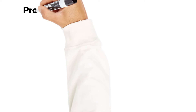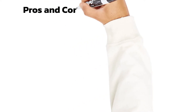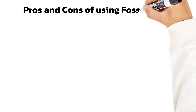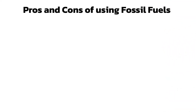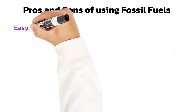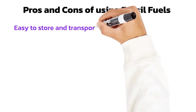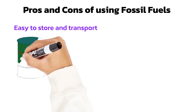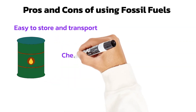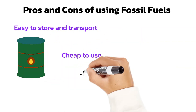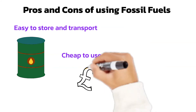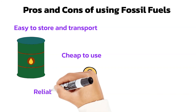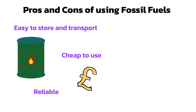For your exam you may be asked to evaluate the use of fuels to generate electricity, so let's look at some of the pros and cons of each type. Firstly, the fossil fuels: coal, oil and natural gas. The positives include they are easy to store and transport using pipelines and tankers, they're relatively inexpensive, and as the infrastructure has been in place for many years the use of fossil-fueled power stations is quite cheap in comparison to other sources of energy. They're also very reliable compared to most other energy sources because our use of fossil fuels doesn't depend on weather conditions.